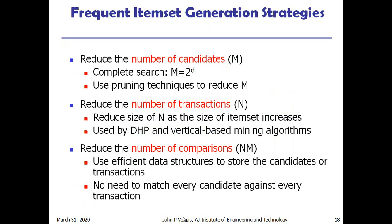For frequent item set generation there are three different strategies. One is reduce the number of candidates: since with D elements the number of candidates is 2^D, we can use pruning techniques to reduce this. Second is reduce the number of transactions: by using certain algorithms we can decrease the transaction count. Third is reduce the number of comparisons by using efficient data structures to store candidates or transactions, so we don't need to match every candidate against every transaction.